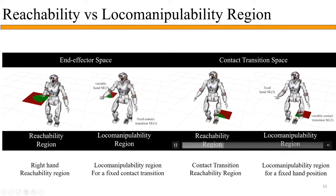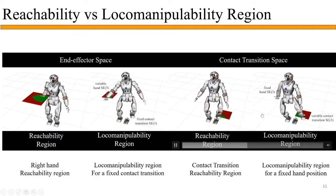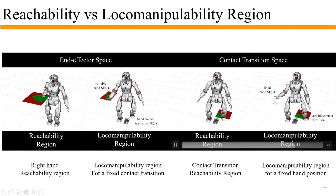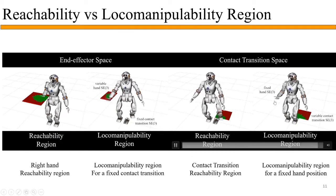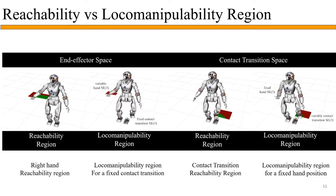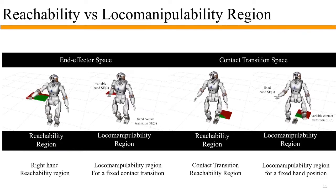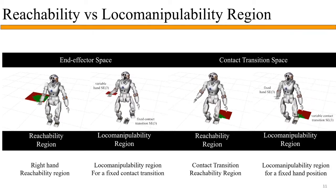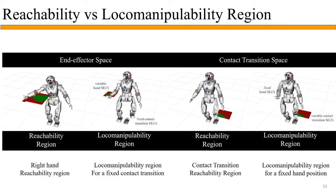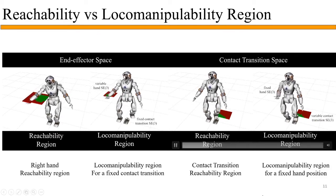Similarly, in the contact transition space, suppose we have to maintain a fixed hand pose — the loco-manipulability region is the area in which we can perform a contact transition while maintaining this fixed hand pose.